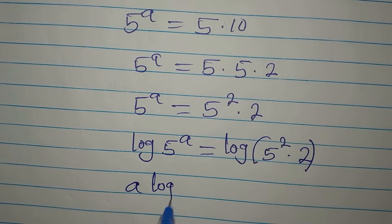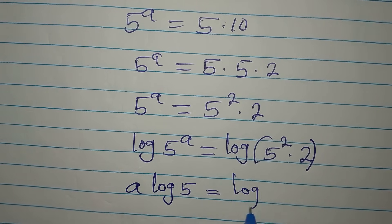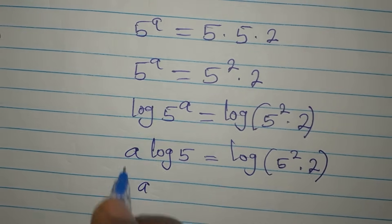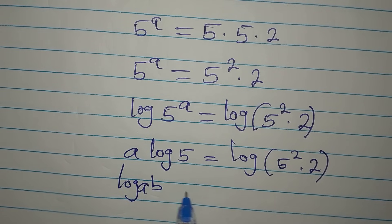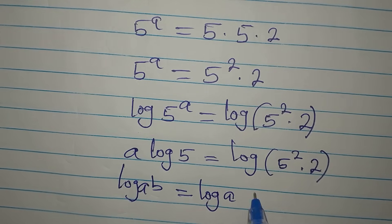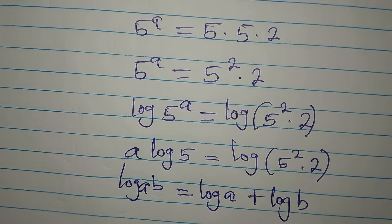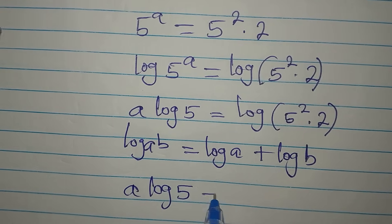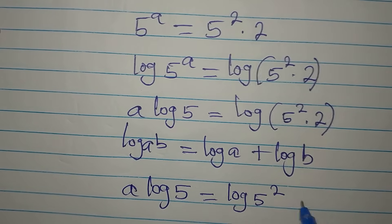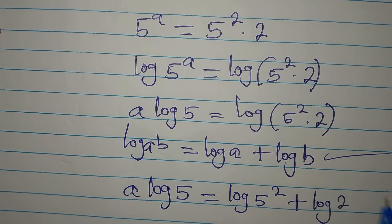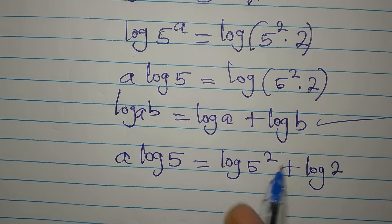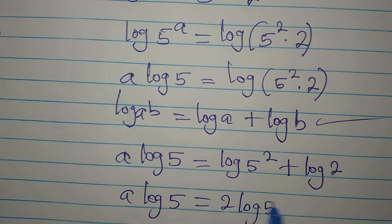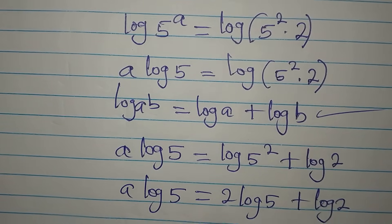The power comes down in front, giving us a·log 5. For the right side, we apply the product rule: log(a × b) = log a + log b. So we get a·log 5 equals log 5 squared plus log 2. The power on log 5 squared also comes down, giving us a·log 5 = 2·log 5 + log 2.